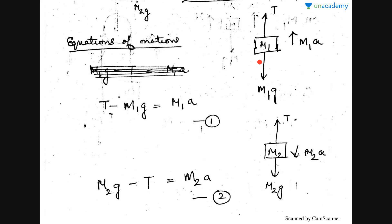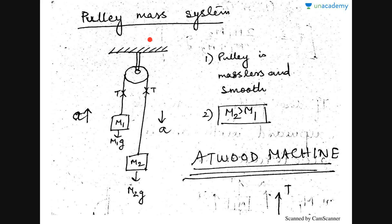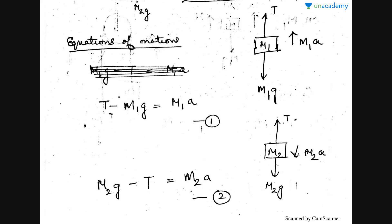For body m1, the forces acting upon it are: the upward tension, the downward weight due to gravity, and the upward force due to acceleration. Since m1 is moving upwards, the tension acts upward and the acceleration acts upward, while gravity acts downward. To get the equation of motion: T minus m1g equals m1a, because T and m1a are both upward and together balance the downward force m1g. This is the first equation.